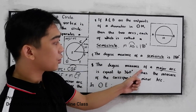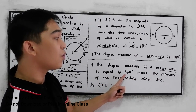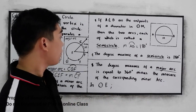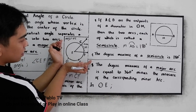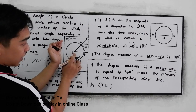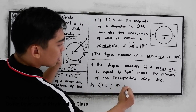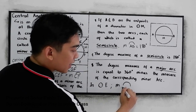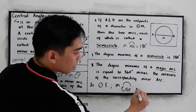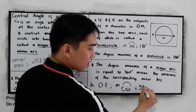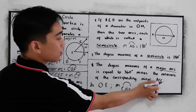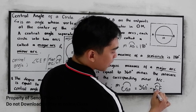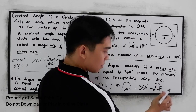The degree measure of a major arc is equal to 360 minus the measure of the corresponding minor arc. If we're going to use illustration one to find, in circle E, the measure of arc CGF, that is equal to 360 minus the minor arc CF. Our measure of minor arc CF is used here.